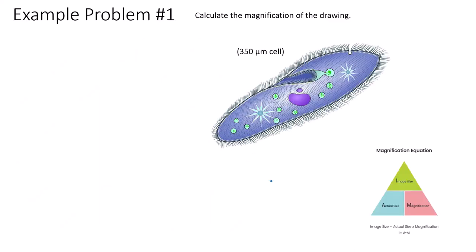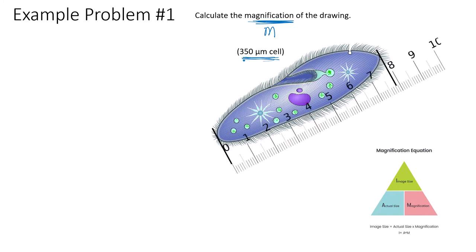Here's an example problem asking you to calculate the magnification of a drawing. The particular object shown is a paramecium. We are solving for M. The problem also gives you the actual size of that specimen. The first step is to figure out how big the image is on screen — you physically use a ruler for that.